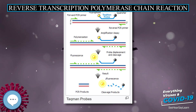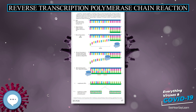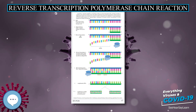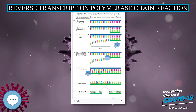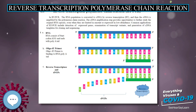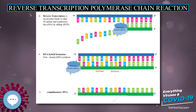Combined RT-PCR and qPCR are routinely used for analysis of gene expression and quantification of viral RNA in research and clinical settings. The close association between RT-PCR and qPCR has led to metonymic use of the term qPCR to mean RT-PCR.